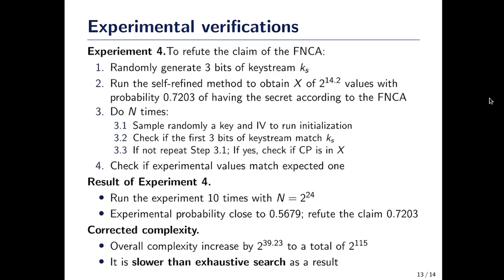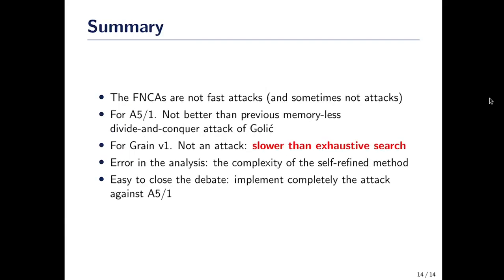In particular, the overall complexity of the attack against Grain V1 should be increased by a factor of about 2 to the power 40, meaning the Fast Near Collision Attack against Grain is actually slower than exhaustive search. As a conclusion, the Fast Near Collision Attacks are not fast attacks — they are slower than exhaustive search for Grain, and for A5-1 they are at most as fast as the attack by Golic 25 years ago. The reason they are not as fast as claimed is that there is an error in the analysis of the complexity of the self-refine method.